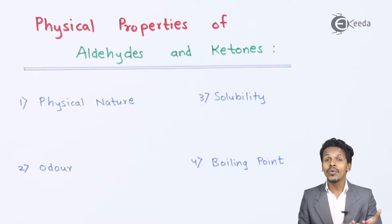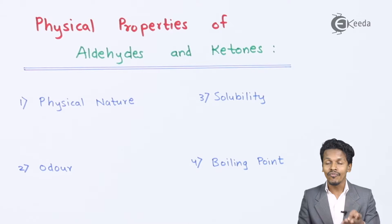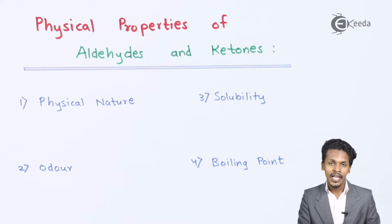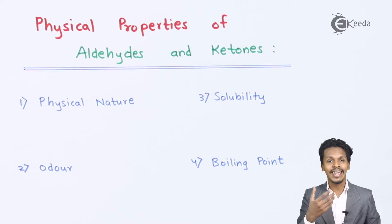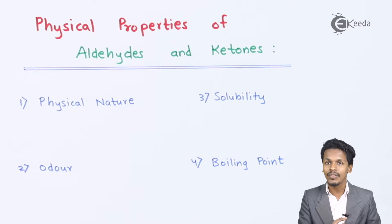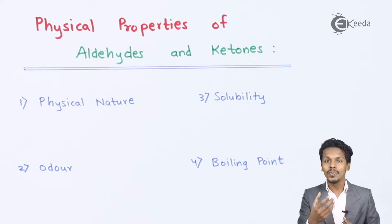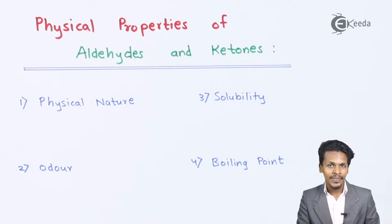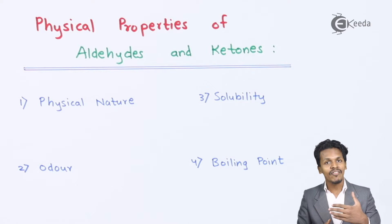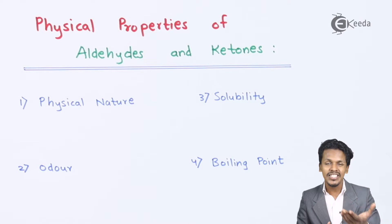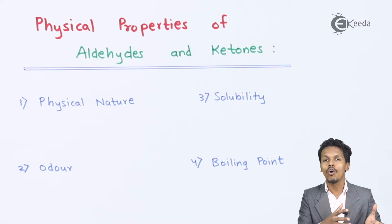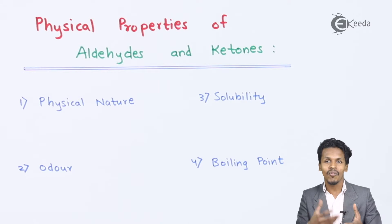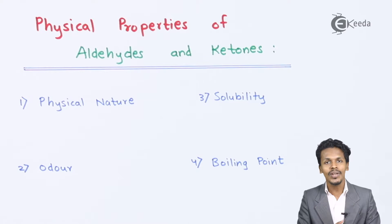Talking about solubility, aldehydes and ketones which have basically a carbon content of four are very much miscible in water. The reason behind that is the lower members of the aldehydes and ketones can form hydrogen bonding, and because of that hydrogen bonding they have strong intermolecular force with the water molecule.